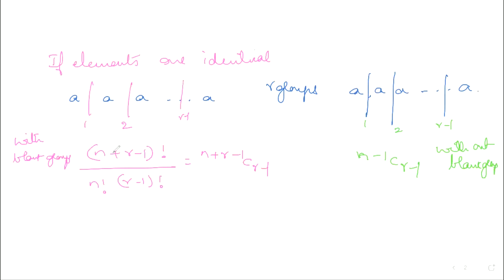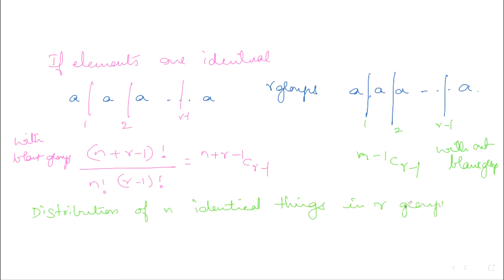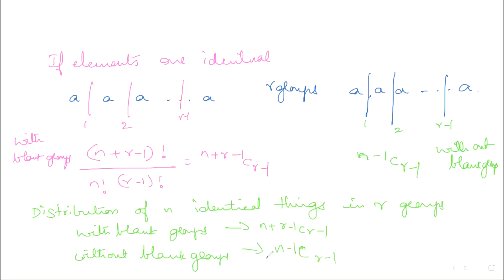Together we can write down the distribution of n identical things into r groups as follows: with blank groups it is n+r-1 C r-1; without blank groups it is n-1 C r-1. This concept is what we are going to apply in finding the non-negative integral solutions and positive integral solutions of any equation.